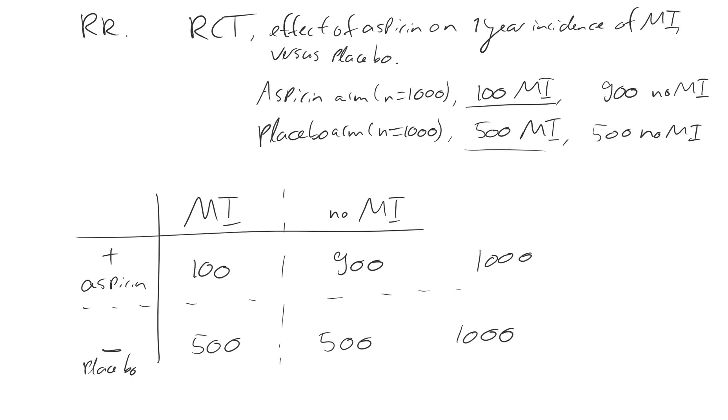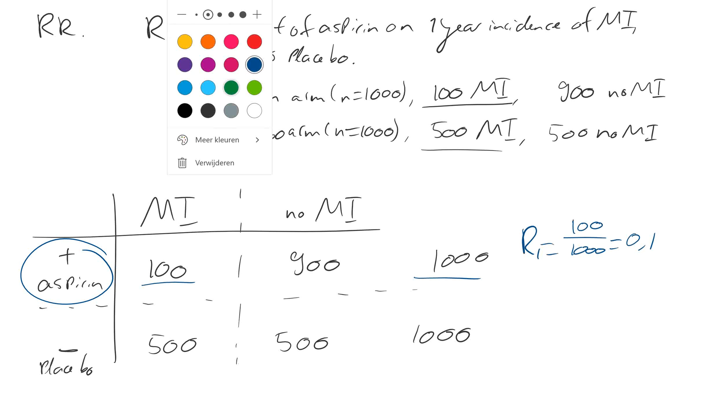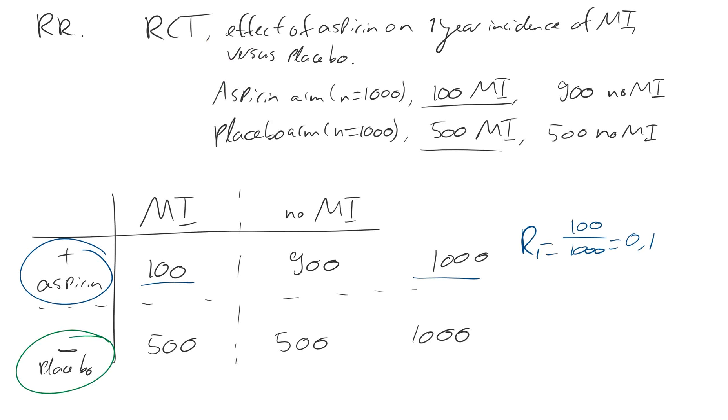Now how do we calculate the relative risk? First, we calculate R1. So R1 is the risk of myocardial infarction in the aspirin group. It's 100 divided by 1,000, which is 0.1. Then we calculate R2, which is the risk of myocardial infarction when you're in the placebo group, which is 500 divided by 1,000, which is 0.5.